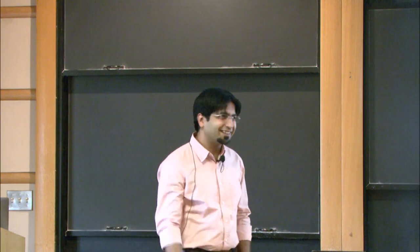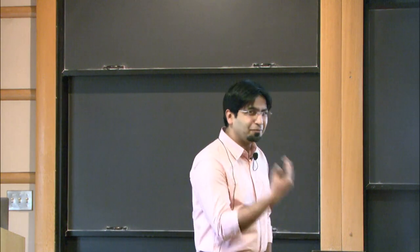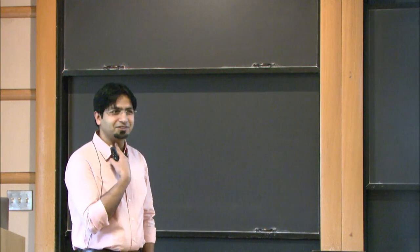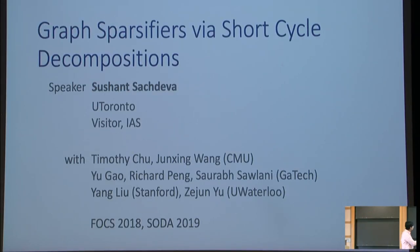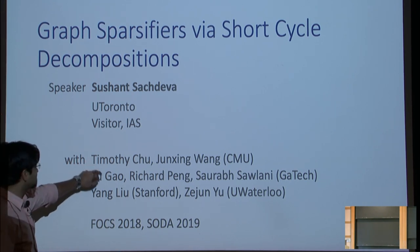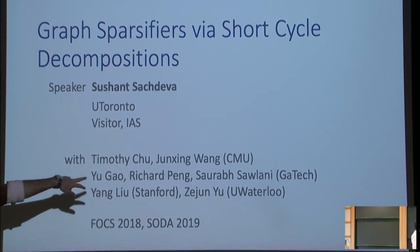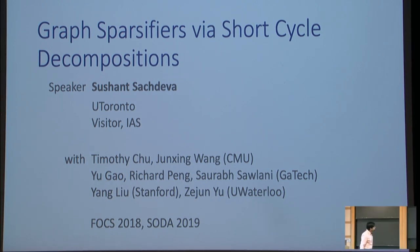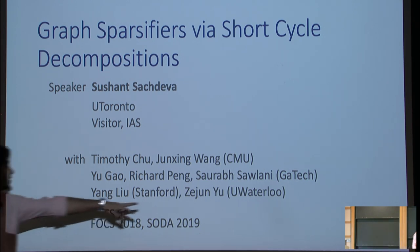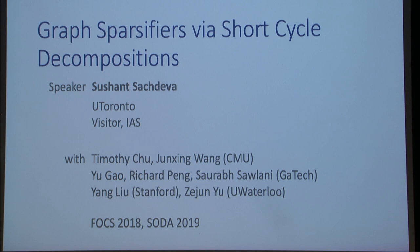Thanks, Arit. Thank you all for coming. I'll be talking about graph sparsifiers by short cycle decompositions. This is based on two papers, one at FOCS last year and SODA this year, with co-authors Timothy Chu, Junjing Wang, students at CMU, Yu Gao, and Saurabh Solani, students of Richard Peng at Georgia Tech. The second paper is with two undergrads, Yang Liu, now at Stanford, and Zijun, who was an undergrad at Toronto.